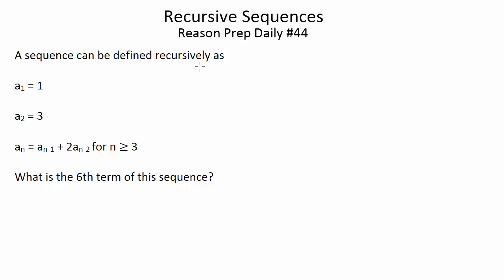So, in this question, a sequence can be defined recursively as follows. The first term is 1, the second term is 3, and every term starting from the third term and moving on is defined by this rule: the nth term is obtained by taking the (n-1) term — the term right before the one you're looking for — and adding it to 2 times the (n-2) term, the term 2 positions back.